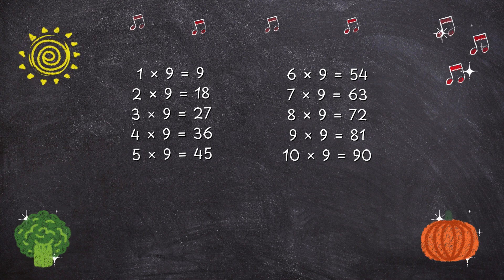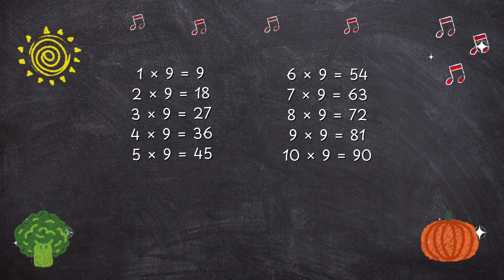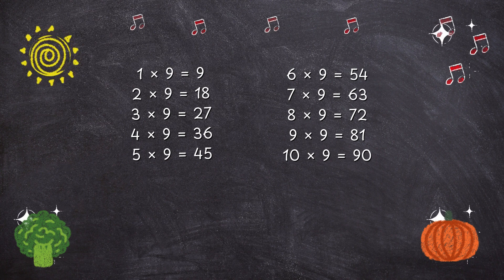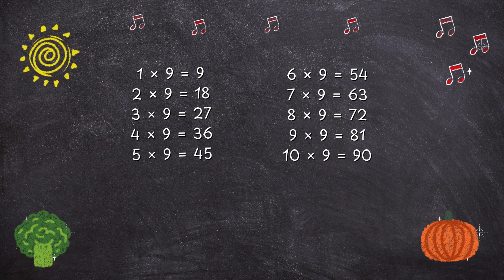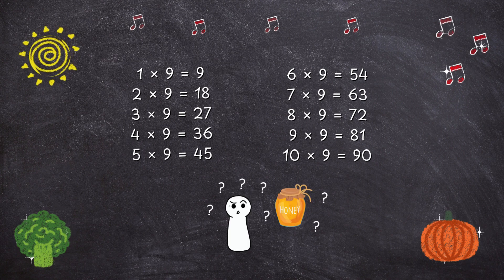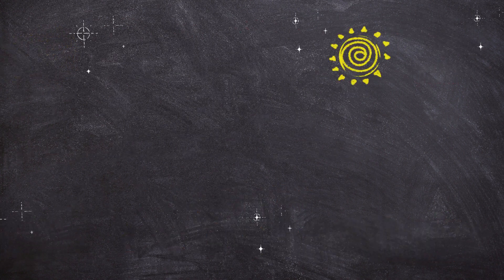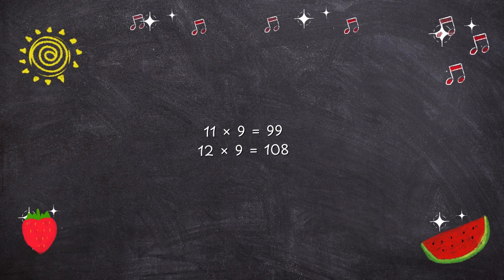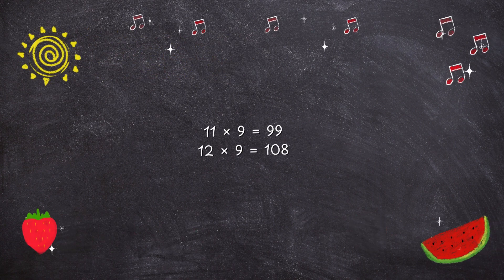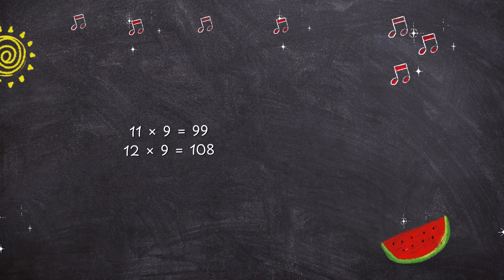10 times 9 is 90. 11 times 9 is 99. 12 times 9 is 108.